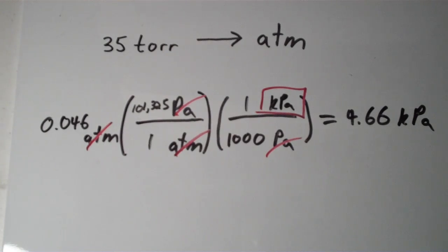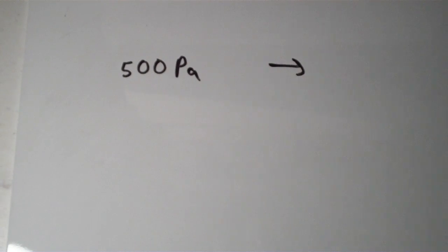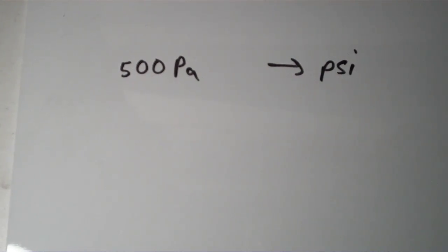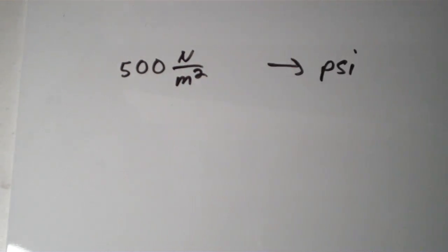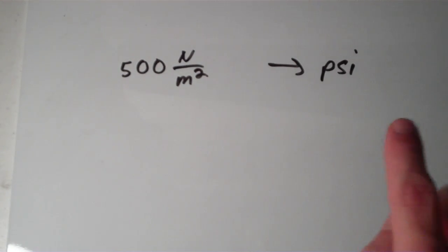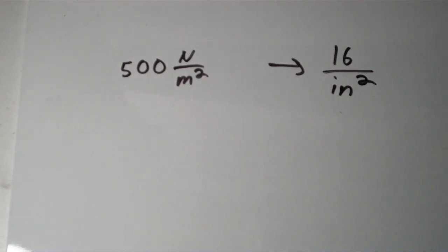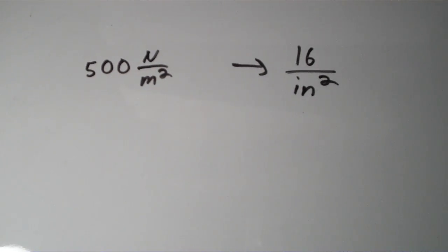Let's move on to one more problem that's going to be a little bit harder. Suppose we have 500 pascals and we want to convert that into psi. Remember that 500 pascals is the same as 500 newtons per square meter, because 1 pascal equals 1 newton per square meter. And psi is just pounds per square inch, so I'm going to rewrite that as pounds per square inch. When we break the units down, this becomes a little bit easier — we can come up with an approach to get from 500 newtons per meter squared into pounds per square inch.